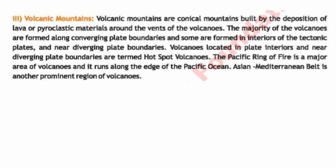Number three: Volcanic Mountains. Volcanic mountains are conical mountains built by the deposition of lava and pyroclastic materials around the vent of the volcanoes. The majority of volcanoes are along converging plate boundaries, and some are formed in the interiors of tectonic plates and near diverging plate boundaries. Volcanoes located in plate interiors and near diverging plate boundaries are termed as hotspot volcanoes. The Pacific Ring of Fire is a major area of volcanoes and it runs along the edge of the Pacific Ocean. The Asian Mediterranean Belt is another prominent region of volcanoes.